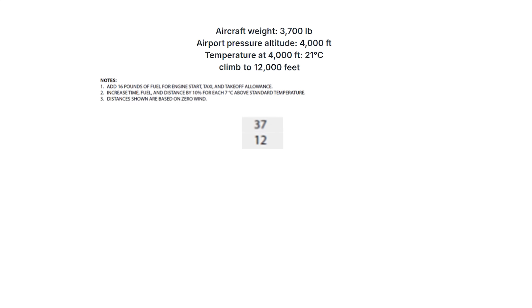The fuel burn of 37 to go to 12,000 is subtracted by the fuel burn of 12 to get to 4,000, and we're left with 25 pounds of fuel. Now on note 2, it says we need to increase this amount by 10% for each 7 degrees Celsius above standard temperature we're at. First we need to find standard temperature. At sea level, this is 15 degrees Celsius — this is the first definition of standard temperature.